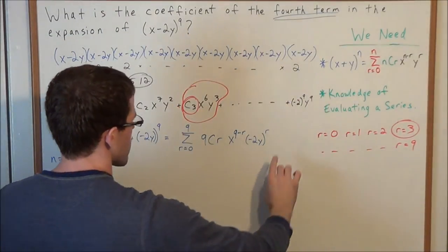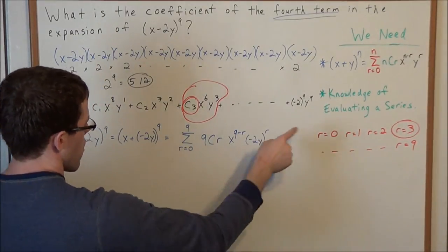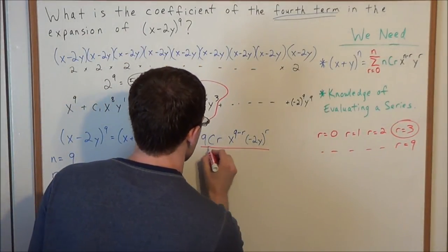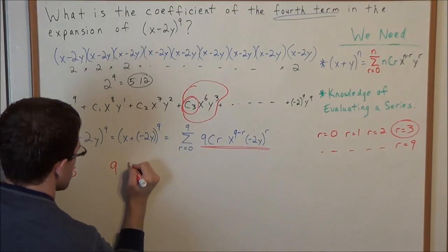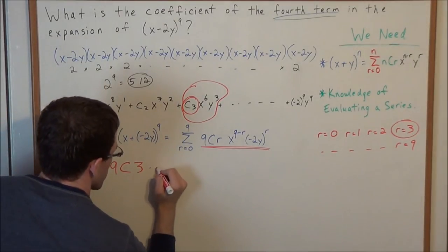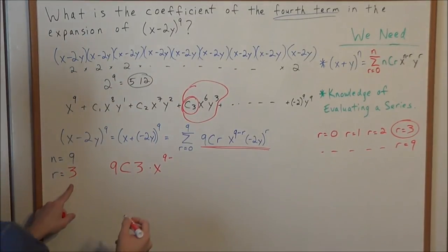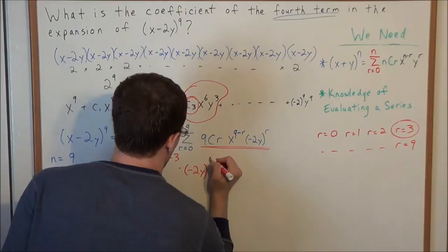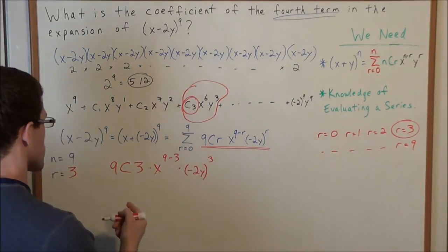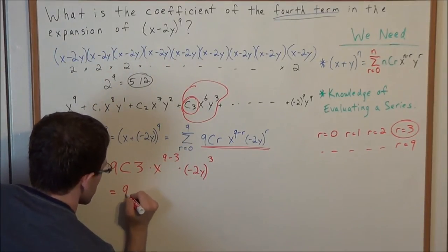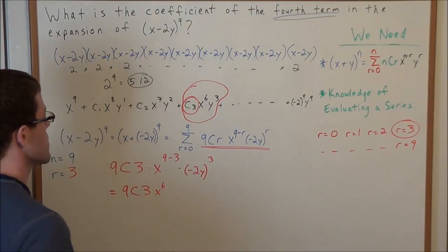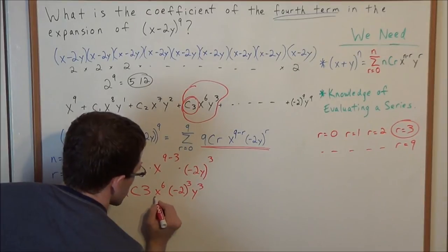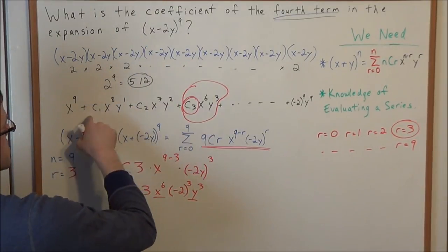This series represents the entire expansion, but we're only concerned with the fourth term, so we evaluate for r equals three. Substituting n equals nine and r equals three: we have 9C3, times x to the nine minus three, times negative 2y to the third power. Simplifying, we have 9C3 times x to the sixth, times negative 2y to the third, which is negative 2 to the third times y to the third. We have x to the sixth y to the third — this is exactly the fourth term.